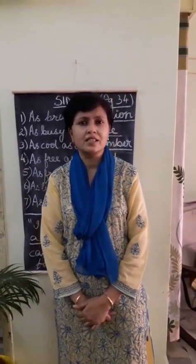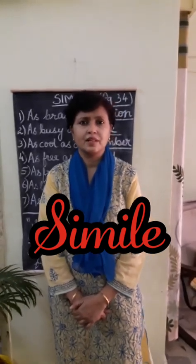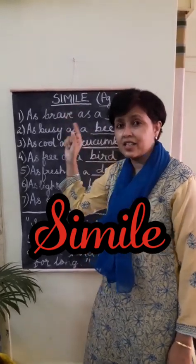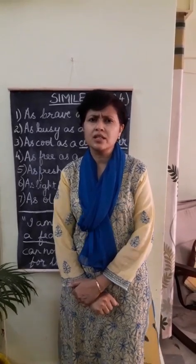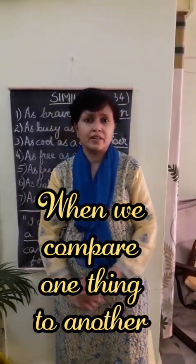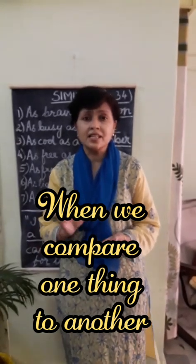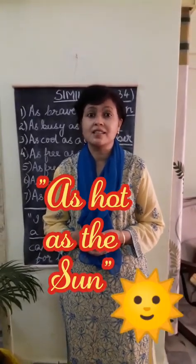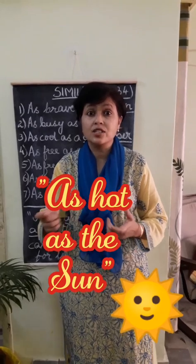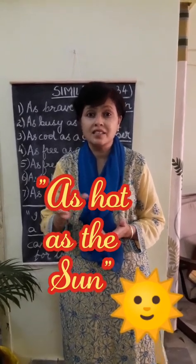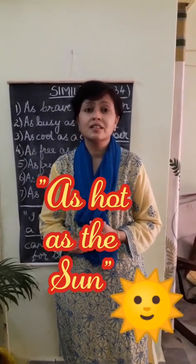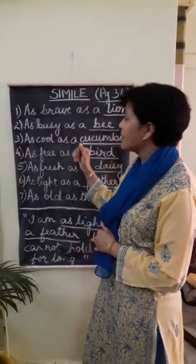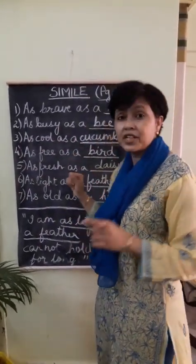In this exercise we are learning about similes — S-I-M-I-L-E, pronounced as simile. A simile is when we compare one thing to another; the sentence we use to compare is called a simile. For example, 'as hot as the sun' — we are comparing the heat to the sun, and that sentence is called a simile. So today we are going to learn a few similes as written on page number 34. Read from your book along with me.